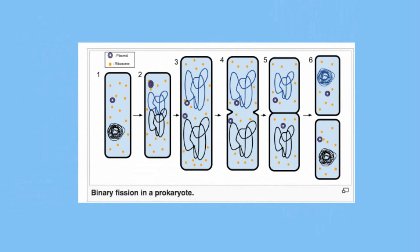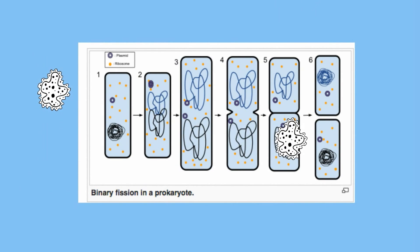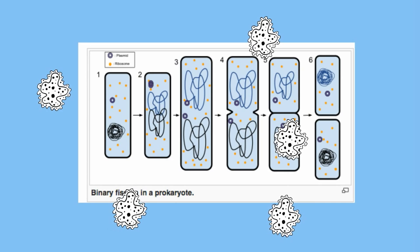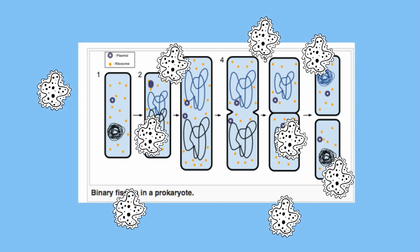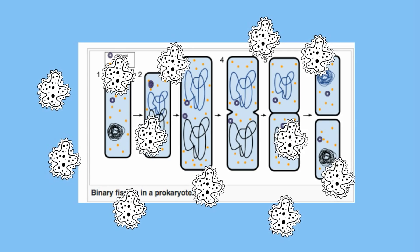In many prokaryotes, which do not have an organized nucleus, carry out binary fission. The DNA makes a copy of itself, the cell stretches, and then makes two identical copies. This can happen very quickly — some bacteria can make up to 520 copies within a couple of hours, so reproduction can be very rapid. The downside is there is no genetic variation within the population.